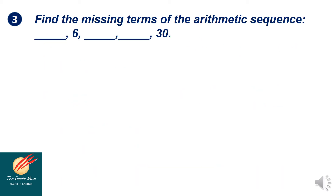Let us consider problem number three: find the missing terms of the arithmetic sequence blank, 6, blank, blank, and 30. Let's illustrate first. The first blank is a sub 1, then 6 is a sub 2, then we have a sub 3, a sub 4, and a sub 5. Since we have more than one arithmetic mean to insert between the arithmetic extremes, we will use the formula d equals a sub n minus a sub k all over n minus k.